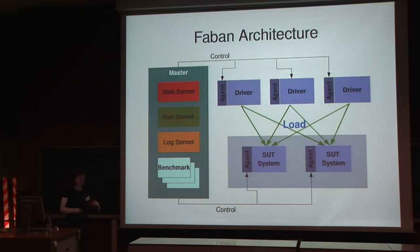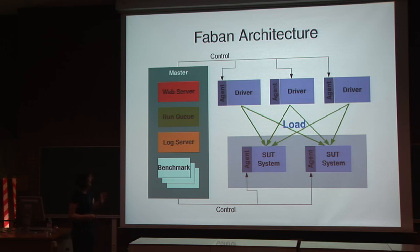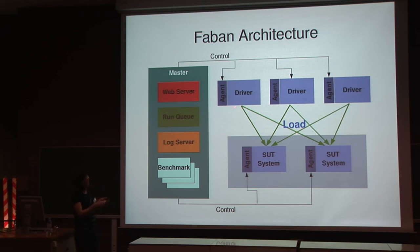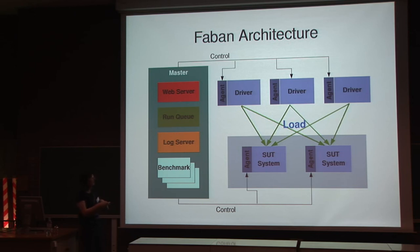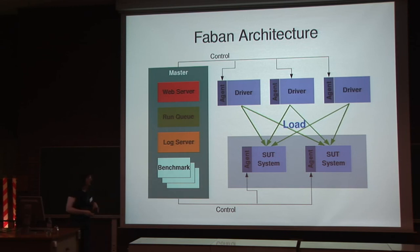The Fabron architecture has two major runtime components. We have a master, which coordinates all of the systems involved in the test. The other part is the agent — we have several agents running on the other systems that are actually involved within the test. At the top here we see a bunch of driver systems; they're actually JVMs. They don't need to be specific systems, so you may find these three running on the same machine. These machines are driving load into the systems on the test. So web servers, proxy servers, databases, memcached instances — all of those systems will be running agents and Fabron can control them all through the master.